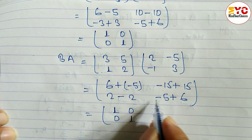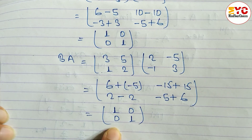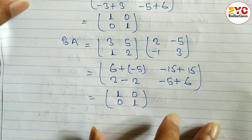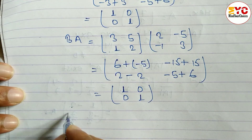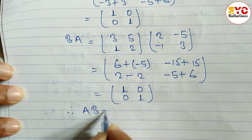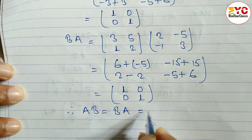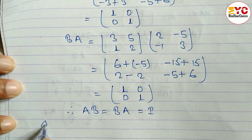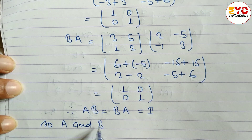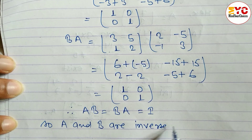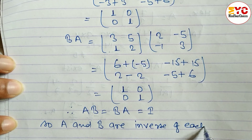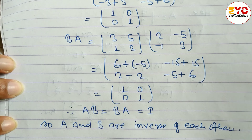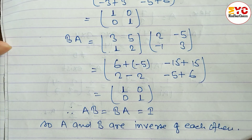When we solve this we again get [1, 0; 0, 1]. So therefore AB is equal to BA is equal to I, and we can conclude that A and B are inverse of each other.